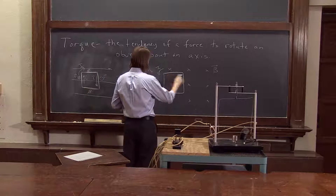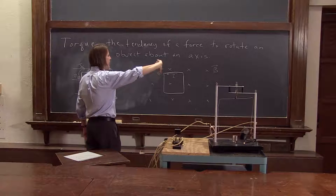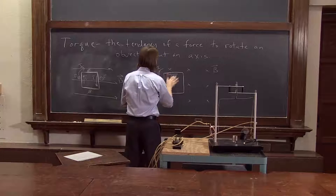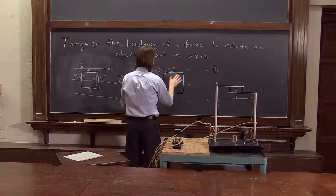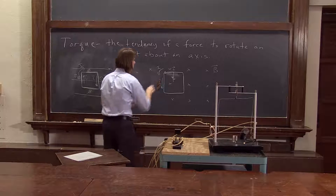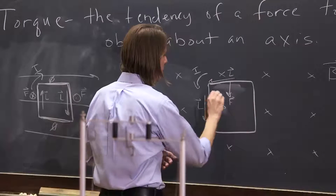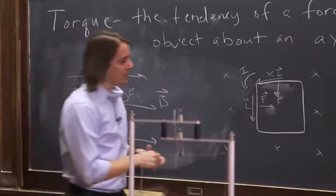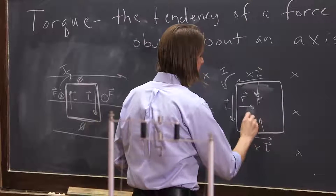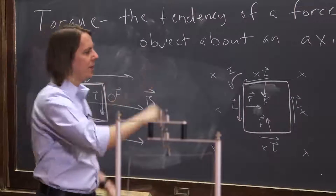So if we have the current going this way, then on this section L is that way. So L crossed with B into the board — the force on this part would be down. The force on the top section is down. And then here, L is down, so L cross B gives a force in. And then on the bottom section, L is now that way — L cross B, the force is up on that section. Now L is up, so for L cross B the force is in.